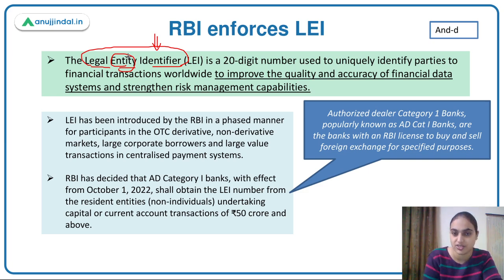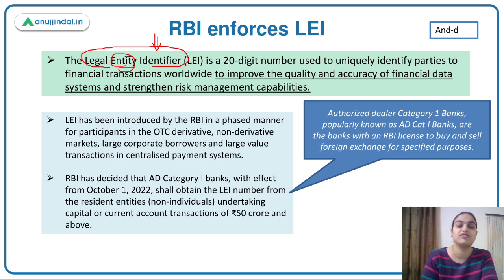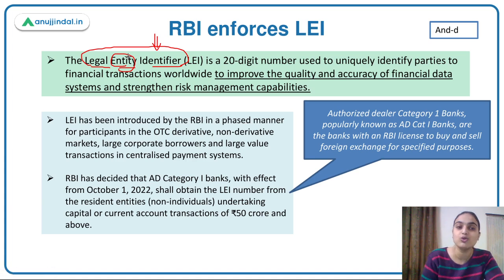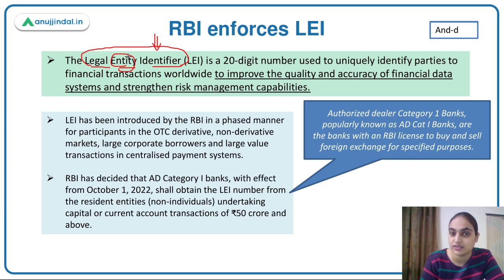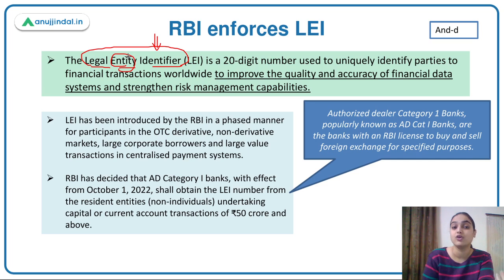When you are doing a financial transaction, this number will be mentioned in your transaction record — usually for large value transactions, such as large borrowers or large value transfers. Through the LEI number, a track record can be kept about the financial transactions. You can assess the quality and accuracy of transactions, check whether risk management rules are properly adhered to, improve the accuracy of your financial systems, strengthen their efficiency, and improve risk management systems.